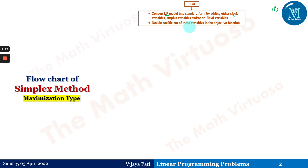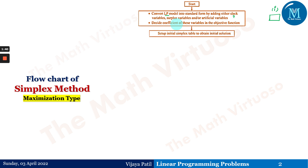Next, decide the coefficients of these variables in the objective function. I have given a table to help you decide what variable or coefficient to use for the maximization type and what the coefficient should be for slack, surplus, and artificial variables in the minimization type. After deciding the coefficients and putting the problem in standard form, we have to set up an initial simplex table to obtain the initial solution.